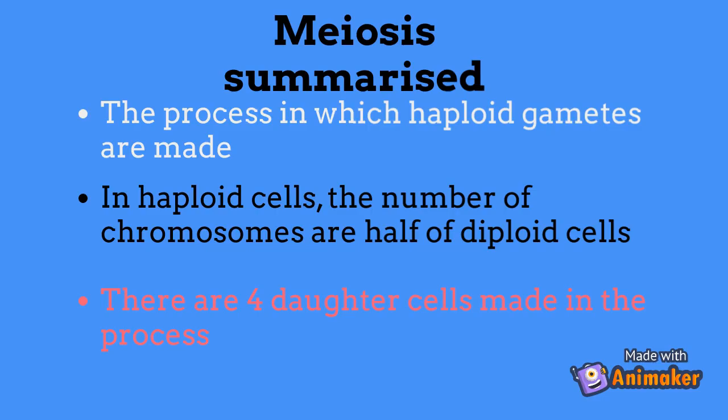So to summarise, meiosis is a special kind of cell division that only happens in germ cells. When this happens, cell division happens twice, resulting in one set of the chromosomes in each of the four daughter cells.